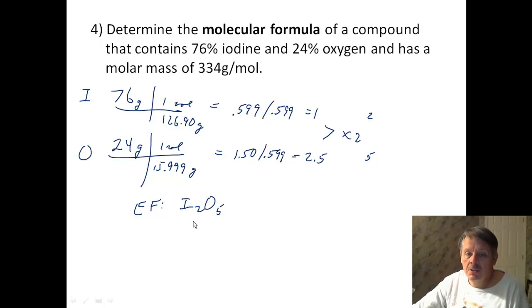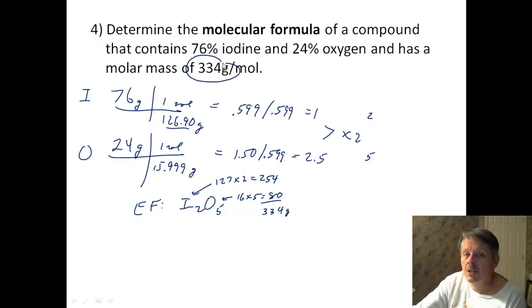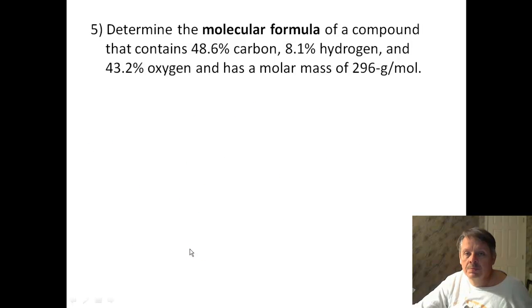So if that one's 2.5, I have to multiply both by 2. If I multiply both by 2, then I get 2 up here, and I get 5 down there. So my empirical formula is I2O5. Well, does that make sense? Is that my molecular formula? Well, who knows? Let's figure this out. Iodine is 127. So I have 127 times 2, which is 254. My oxygen is 16 times 5, which is 80. If I add those together, I get 334 grams, and that's exactly what I want. So my empirical formula and my molecular formula are, in fact, the same. I don't have to double it by anything, triple it by anything. It is the same.